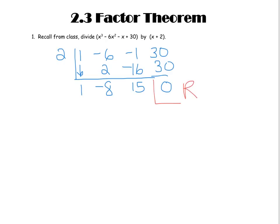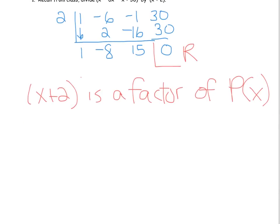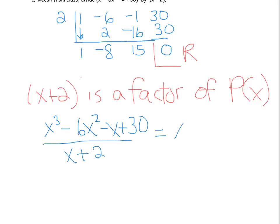I want to bring your attention to this: because this one has a remainder of 0, that actually means that x plus 2 is a factor of the polynomial — let's just call it p of x. So that means we know that x cubed minus 6x squared minus x plus 30, divided by x plus 2, equals x squared minus 8x plus 15.